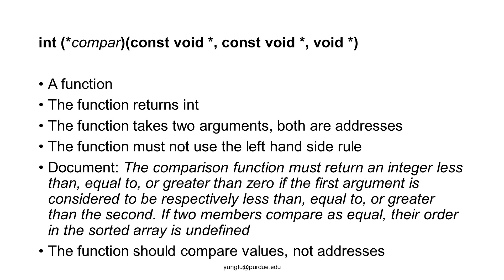Putting const in front of the pointer means this function must not use the left-hand side rule to modify the values stored at those two addresses. The comparison function must return an integer less than, equal to, or greater than 0. If two members compare as equal, their order in the sorted array is undefined — qsort may or may not swap the two values.